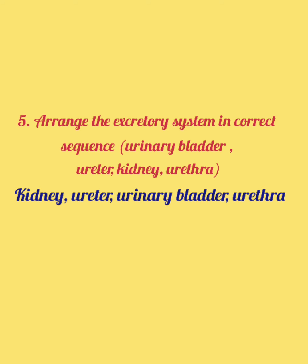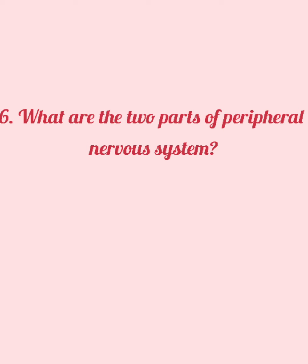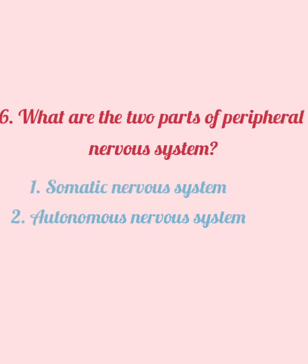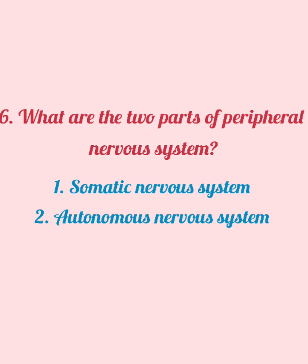Question number 6: What are the two parts of the peripheral nervous system? Point 1: Somatic nervous system. Point 2: Autonomic nervous system.